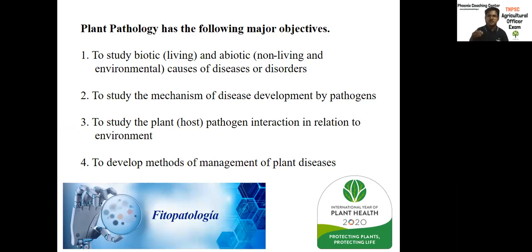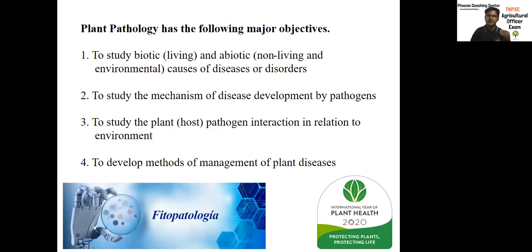The third important objective is to study the plant-pathogen interaction in relation to environment. For example, currently we are facing the pandemic situation of COVID-19 — the mechanism of how COVID-19 expresses in our body system is the mechanism of disease development. Environmental conditions like still or cold conditions may lead to more severity of disease. The fourth and most important objective is methods of management of plant disease. The ultimate aim is management — just as we are expecting a vaccine for COVID-19, every plant expects its own management methods for curing disease.